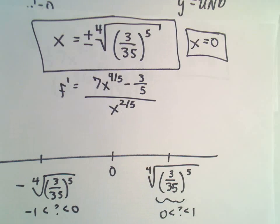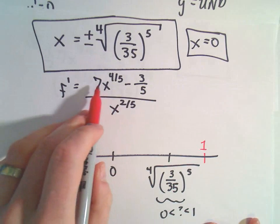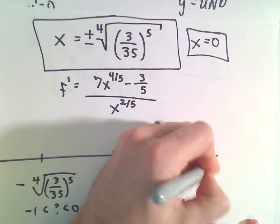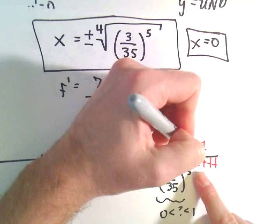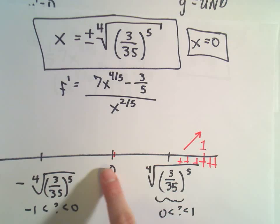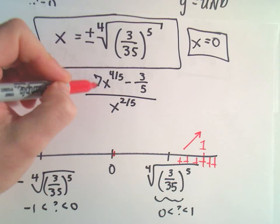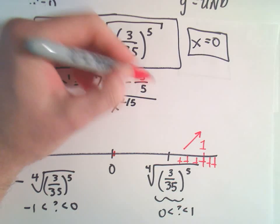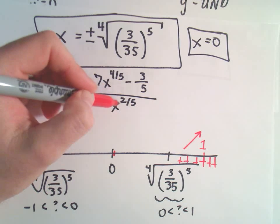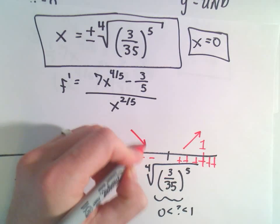For example, suppose we take positive 1 and plug that in. That's 7 minus 3/5, which is positive, over a positive — so the function is increasing on that interval. Now take a number very close to 0 but positive. The first term is close to 0, so we have roughly minus 3/5 in the numerator, which is negative. A positive number to the 2/5 power is still positive. So negative over positive is negative — the function is decreasing.